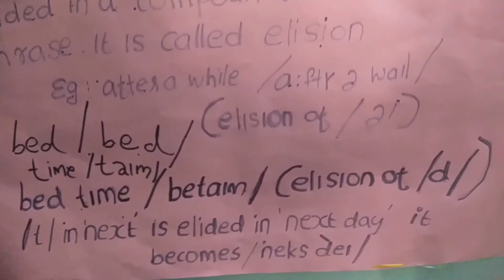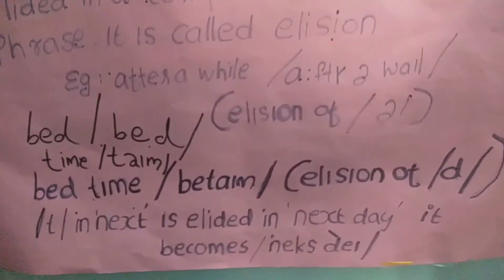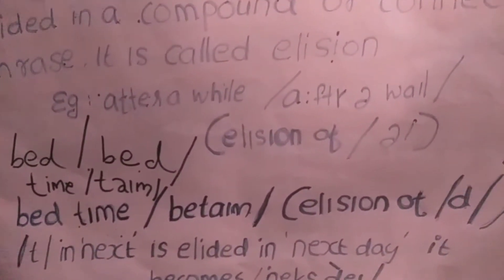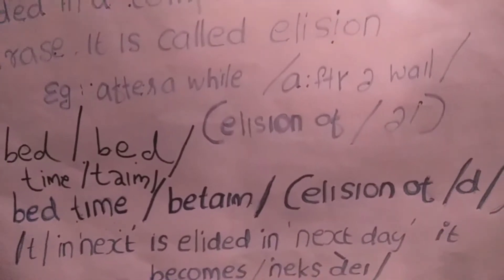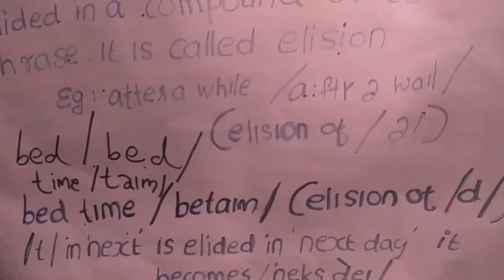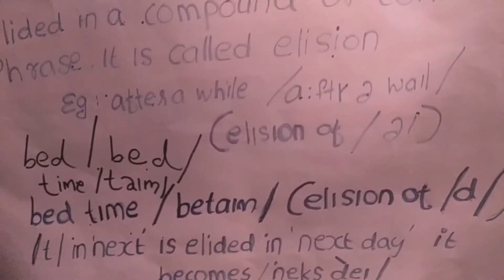That's why we pronounce 'roommate.' It is made of 'room' and 'mate' — room is separate, mate is separate. Then in 'roommate,' one sound is dropped. That is elision.